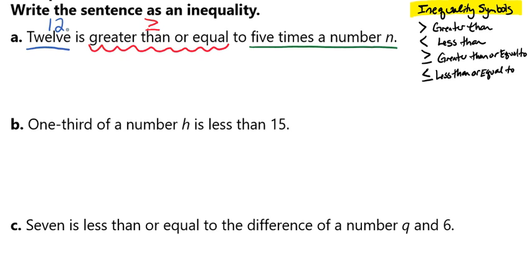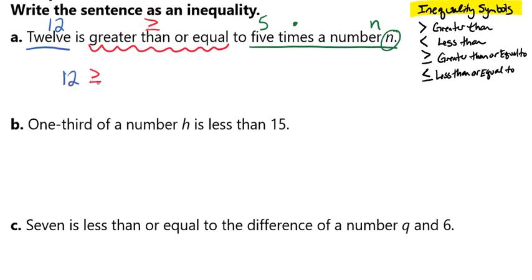So we have '12 is greater than or equal to 5 times a number.' We might even write that with the numbers right above our words. 5 times n — so if we were to write that out, we would have 12 ≥ 5n, and we would be done.